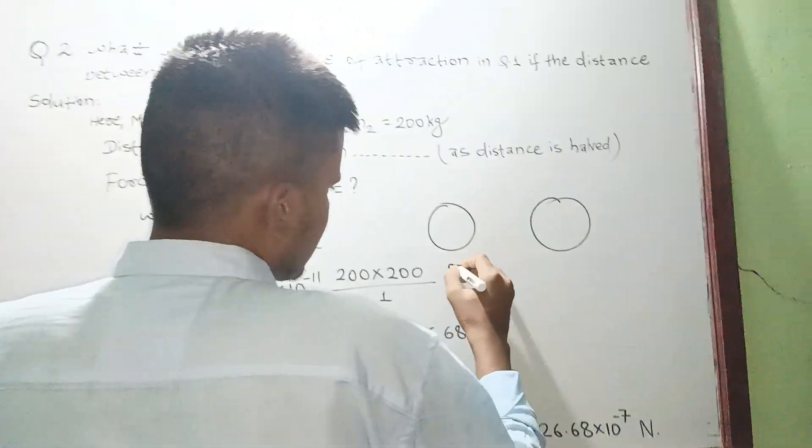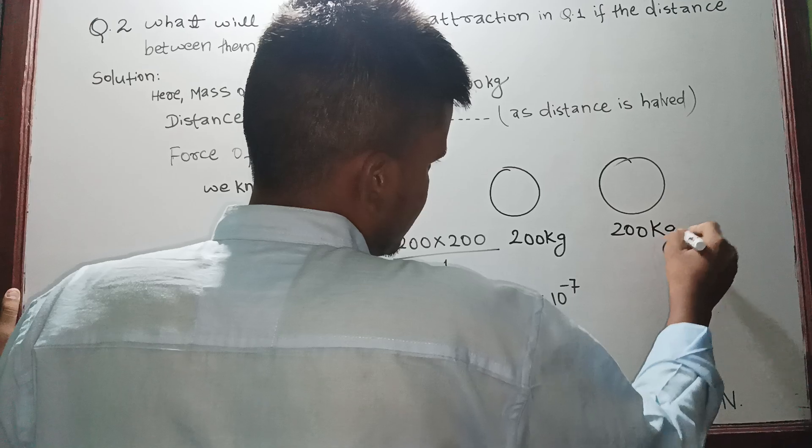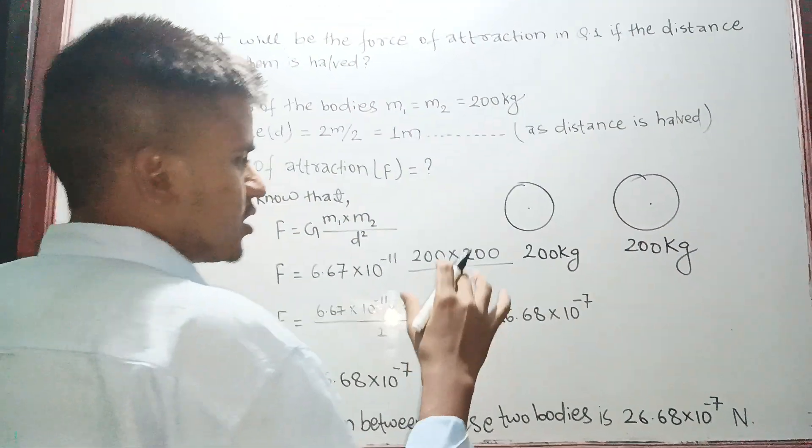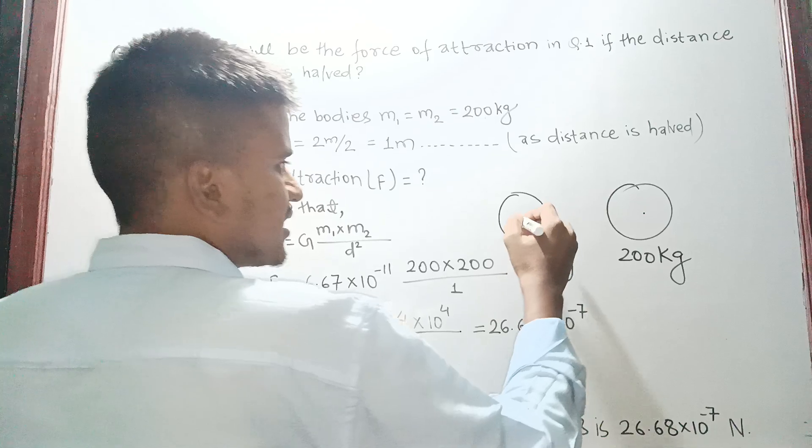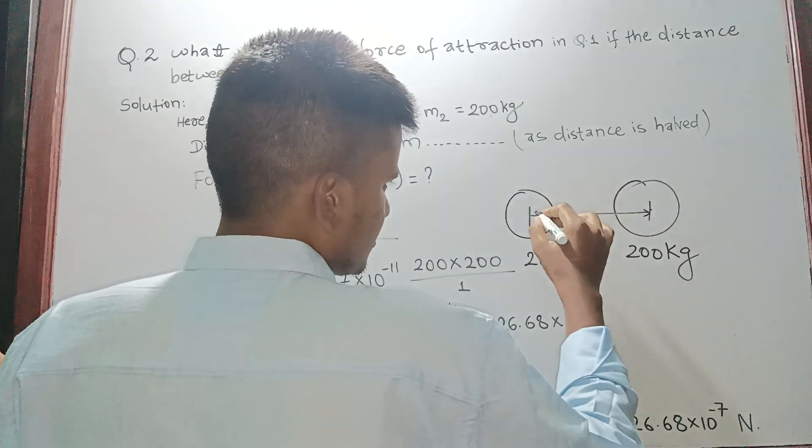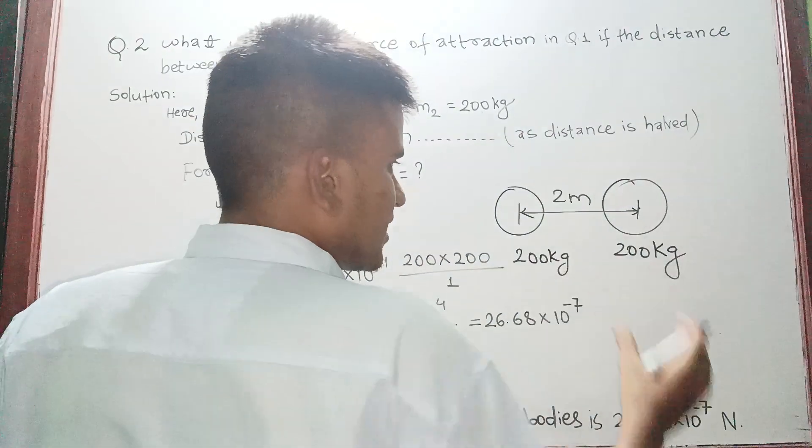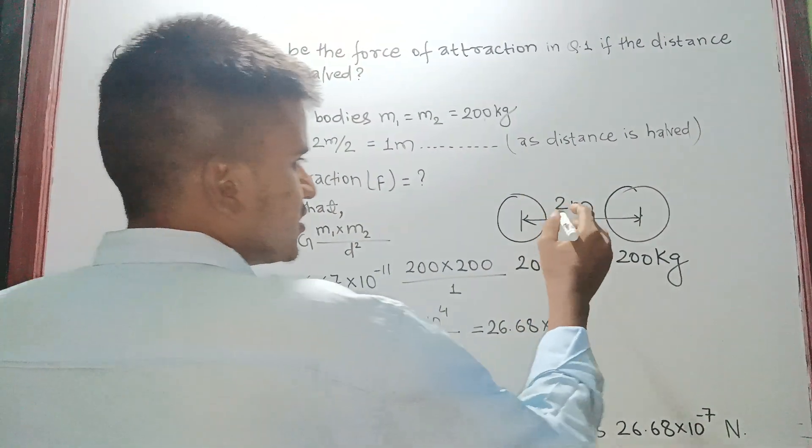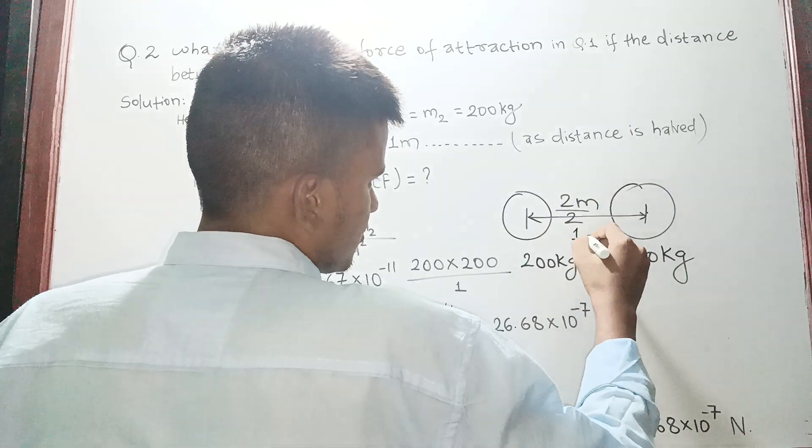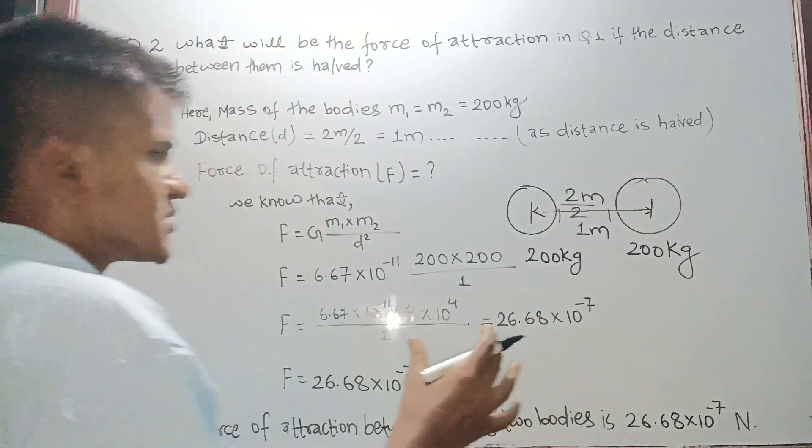What will be the force of attraction? In question, 200 kg, this was also 200 kg, center to center. The distance was 2 meters. Now the question is saying that the distance is half. If the distance becomes half, then it will become 1 meter.